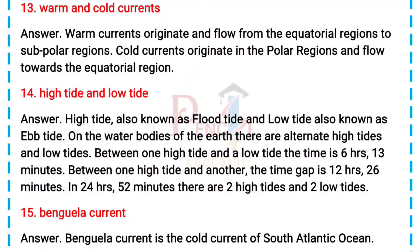13. Warm and cold currents. Answer: Warm currents originate and flow from the equatorial regions to sub-polar regions. Cold currents originate in the polar regions and flow towards the equatorial region.